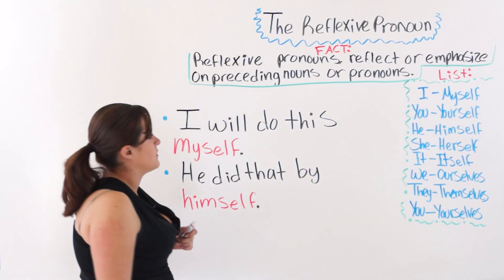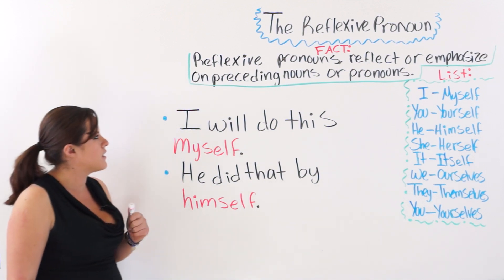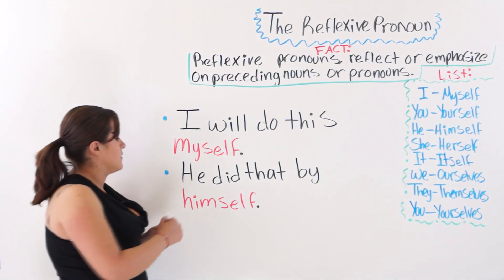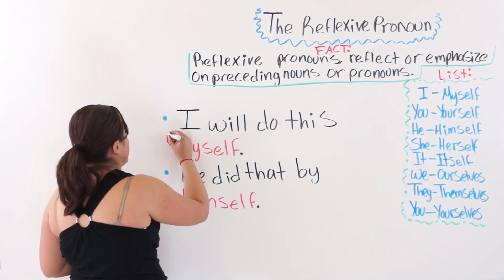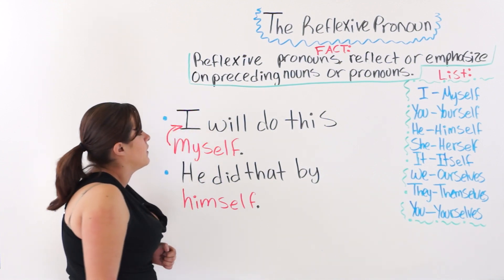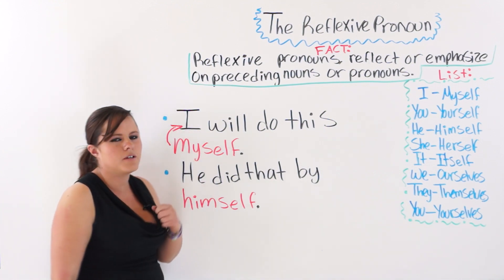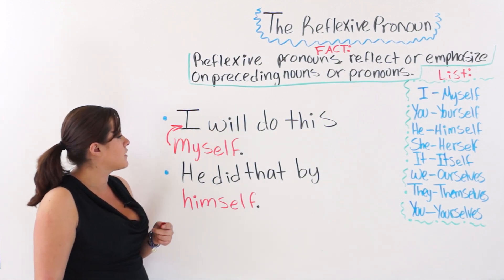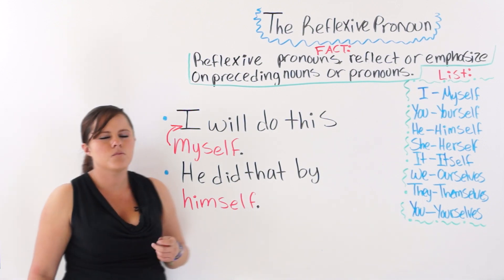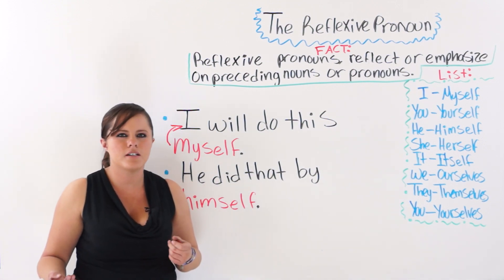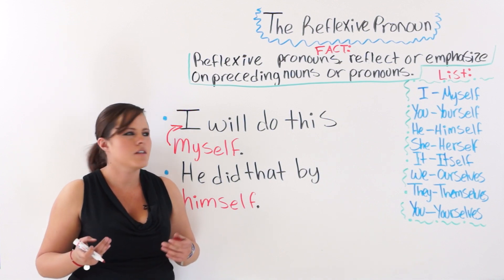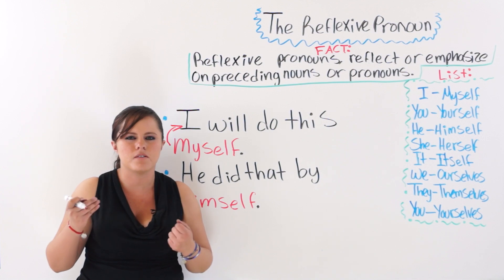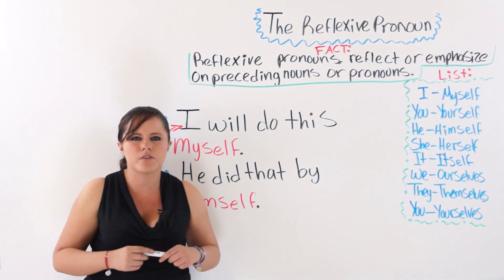I have two examples here written on the board. The first one says: I will do this myself. As you can see, the reflexive pronoun 'myself' is reflecting on the personal pronoun and subject 'I.' I will do this myself — meaning I will do this without any help, I will do this personally.